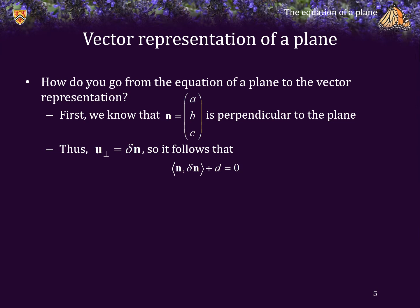Consequently, it follows that the inner product of the normal vector and U perp, or delta times N, plus D must equal 0.